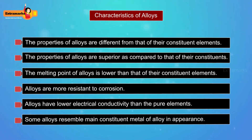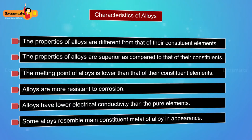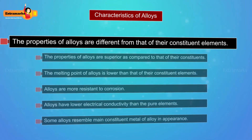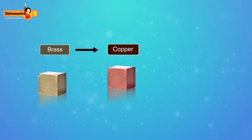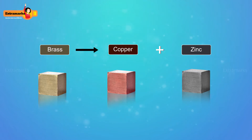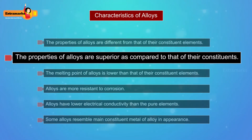The properties of alloys are different from that of their constituent elements. For example, brass is an alloy of copper and zinc. This alloy is more durable than copper and more attractive than zinc. The properties of alloys are superior as compared to those of their constituents.